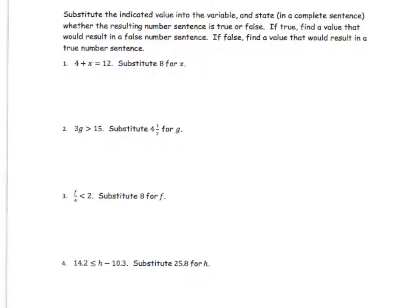For this one, for each of these questions, you're going to substitute in the value and state if it is true or false, but in a complete sentence. If it is true, find the value that would result in a false. So if it's true, find the false. If it's false, find the true. So what could you substitute in to get the opposite answer? So if it was true, figure out what you'd have to put in for false and vice versa.